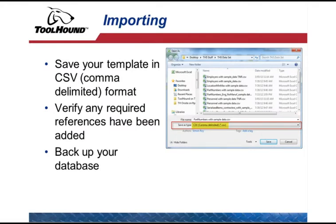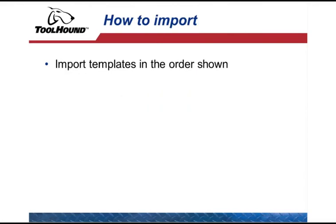Before attempting to import any data, make sure that you have entered all the required supporting references in ToolHound. The most important is the location hierarchy for the Stocking Point ID and Visibility ID. Other references include crafts, vendors, manufacturers, units of measure, conditions, and departments, if used. This is also a good time to make a backup of your database. The templates must be imported in the order shown, otherwise the import will fail since one piece of data builds on another.